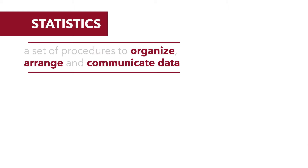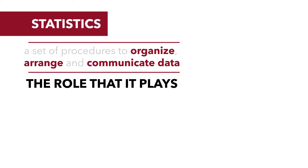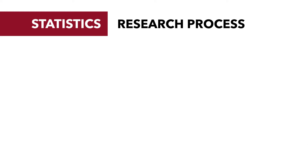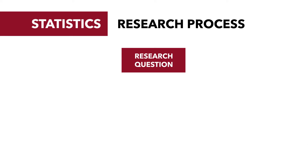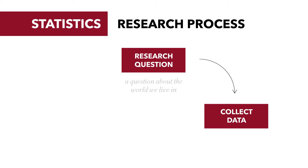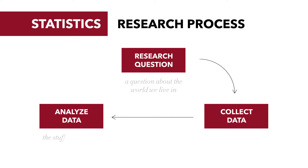A simple way to think about statistics is the role that it plays. Statistics is a part of the larger scientific or research process. That research process starts with a simple research question — it's the starting point. We start with a research question that asks something about the world we live in, devise a plan to collect data, go out and collect those data, and then the next step is to analyze the data. This is the stuff of statistics — statistics is the analysis of data.